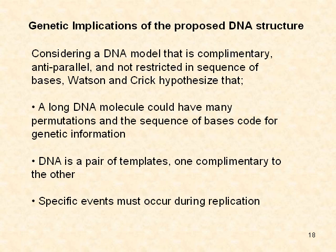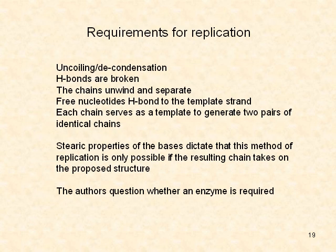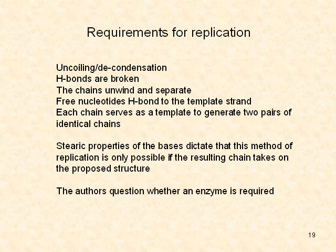Specific events must occur during replication. Based on their model, Watson and Crick identified the requirements of DNA self-replication. First, uncoiling of DNA helical chain structures, followed by breakage of hydrogen bonds. Then the chains unwind and separate. In an aqueous environment, free nucleotides hydrogen bond to the template strand. It is important to note that each chain serves as a template to generate two pairs of identical chains. Crick noted that the properties of the bases dictate that this method of replication is only possible if the resulting chain takes on the proper structure.